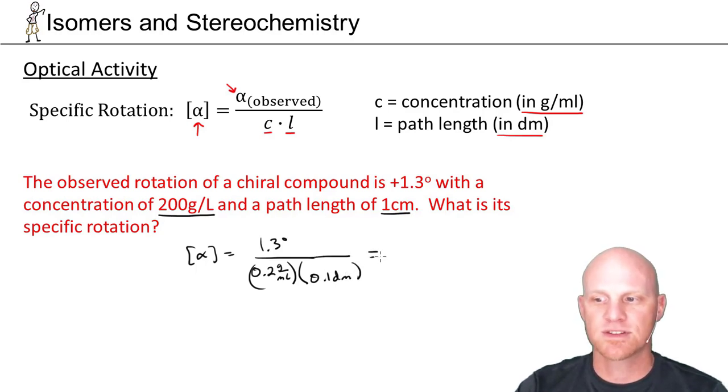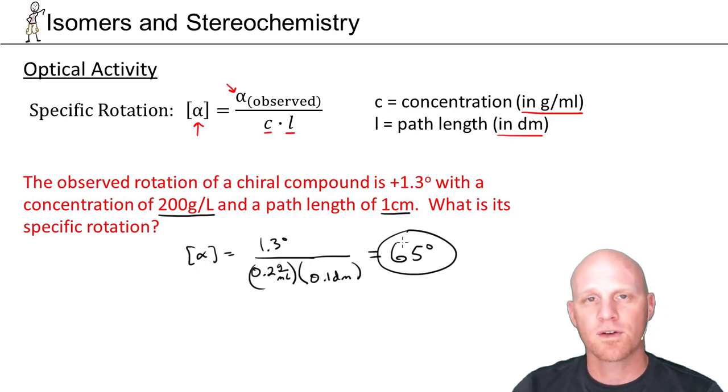In this case, we can see that specific rotation is 1.3 over 0.2 and over 0.1, and you'll come out with 65° for that specific rotation. This is one of the rare calculations you might see in an organic chemistry class.